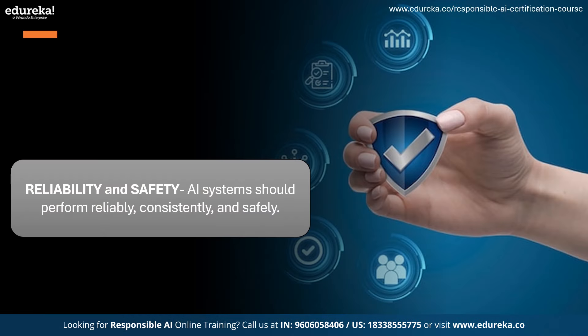Reliability and safety: AI systems should perform reliably, consistently and safely under normal circumstances and in unexpected conditions. To make AI reliable and safe, it is important to think about how things could go wrong, how the AI might react, how people can fix it quickly, and to always prioritize keeping humans safe.